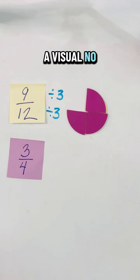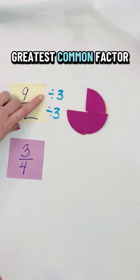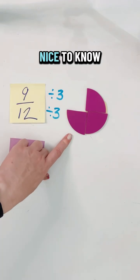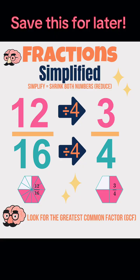Do you need a visual? No. Can you just divide by the greatest common factor? Yes. Is it nice to know why it works? Absolutely, absolutely. What do you think?